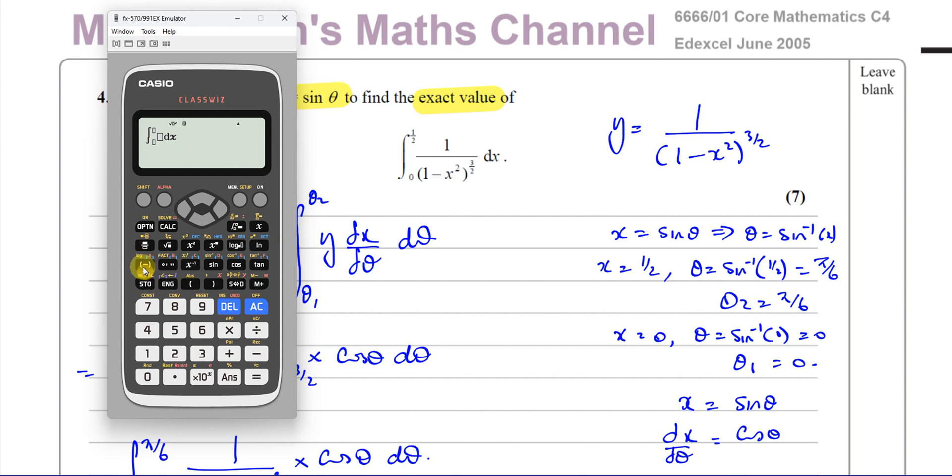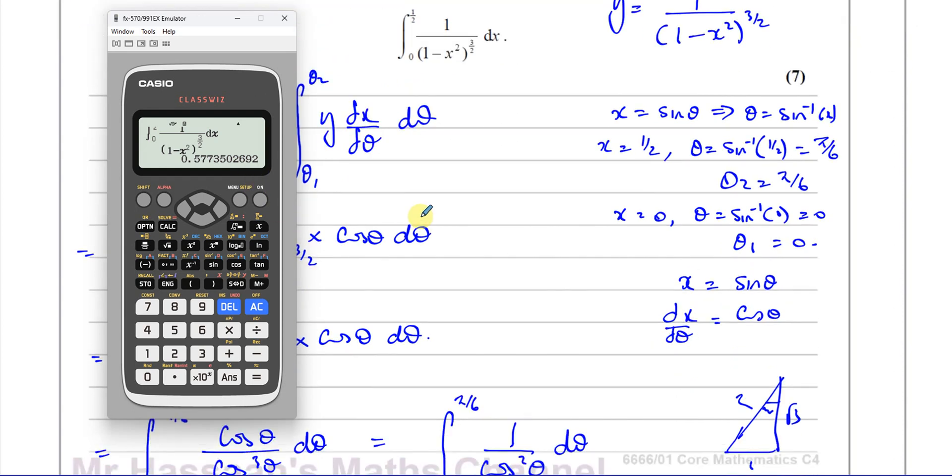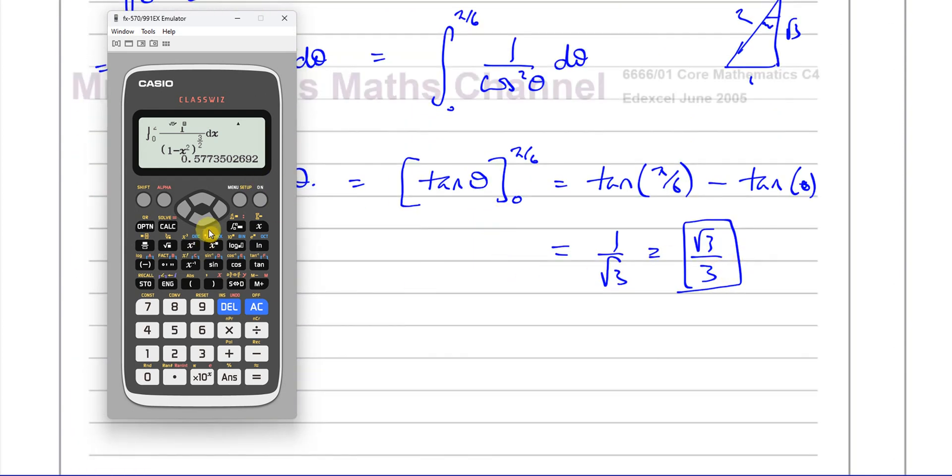I'm sure in the days when this exam was set, you couldn't, but now you can. So you have, in brackets, 1 minus x squared. The x is squared. And then close the bracket, then you're going to have to the power of 3 over 2. That's set up. And then you're going to have 0 as one limit, and the other limit is going to be a half. Let's see what that gives us. Now, it doesn't give us the exact value, but let's hope that this is the same as that. So when you do root 3 over 3, it should be the same as 0.57735.